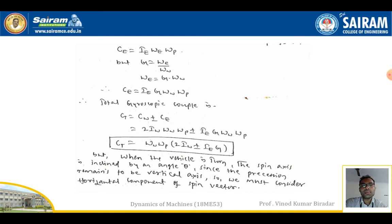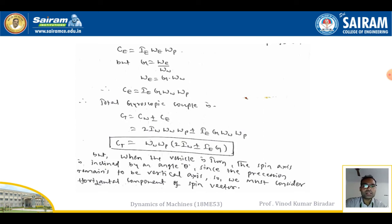Therefore the total gyroscope couple is the combination of both: Ct = Cw + Ce = 2·Iw·ωw·ωp ± Ie·G·ωw·ωp. Taking ωw and ωp as common factors, this becomes: Ct = ωw·ωp·(2·Iw ± G·Ie).